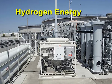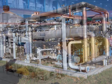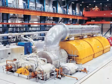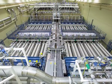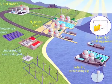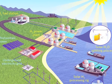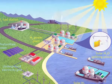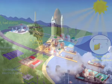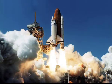Moving on to hydrogen energy — when hydrogen is combusted, it combines with oxygen to form water. In the entire process of hydrogen combining with oxygen, a large amount of energy is released. This is the same principle used in rocket engines.